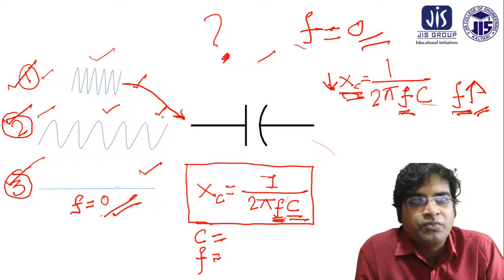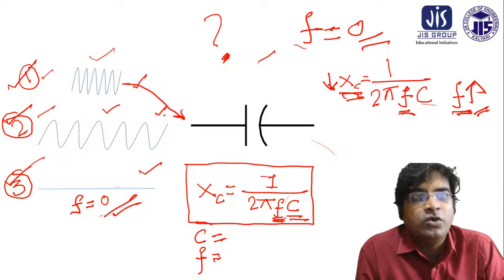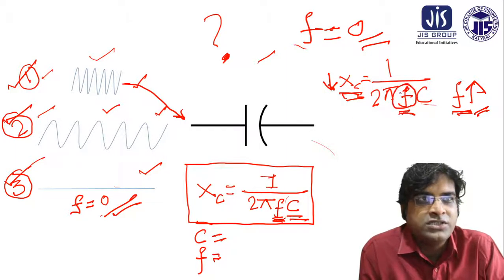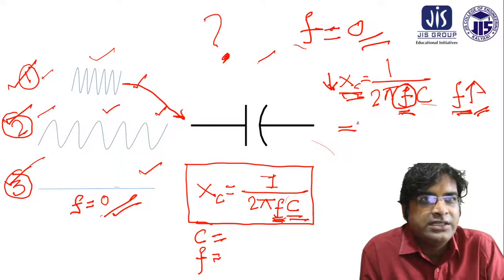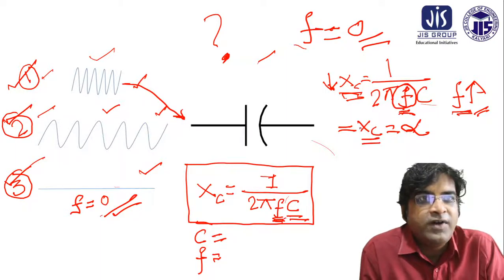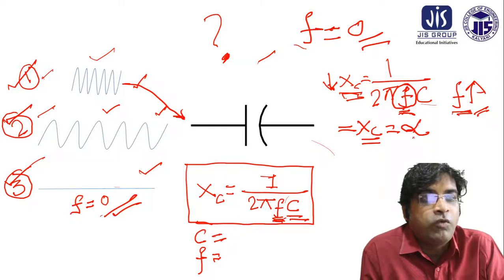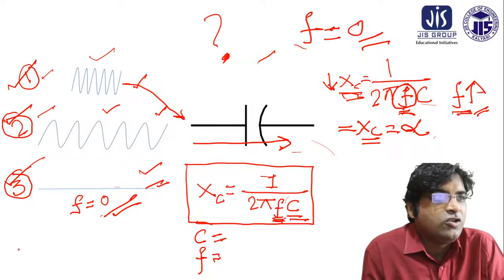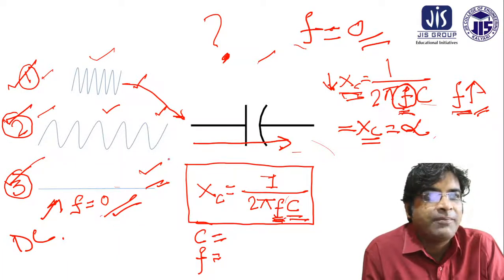In the case of DC, the frequency f equals zero. If f equals zero and I put that value into the equation, XC becomes infinite. If f is zero, XC becomes infinite — that means XC represents an open-circuit concept. So for that reason, the DC signal is not able to pass through this capacitance. That is why DC is not passing — it is the DC signal that cannot pass through this capacitance.